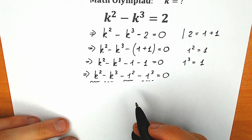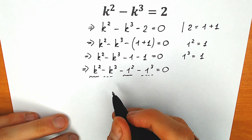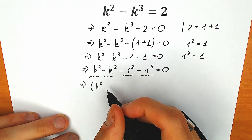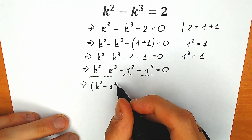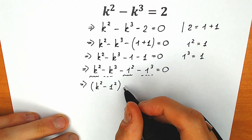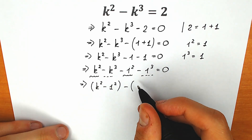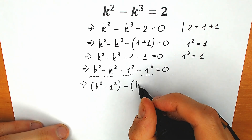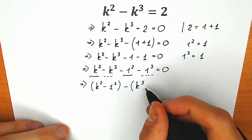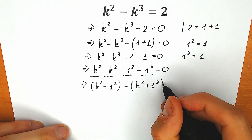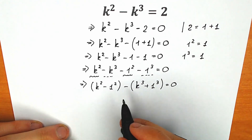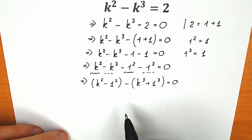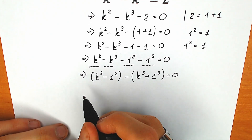Let's group them. In the first parenthesis, let's group our squares: we have k squared minus 1 squared. And in the second parenthesis, because of the minus sign, we can't write k cubed minus 1 cubed — we need to write it as minus (k cubed plus 1 cubed), equal to zero. When we open this parenthesis, we will have the same expression.